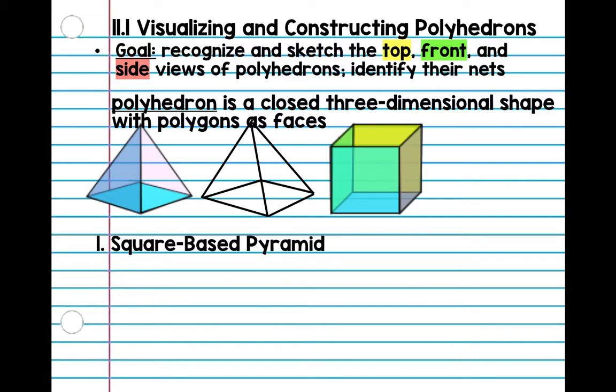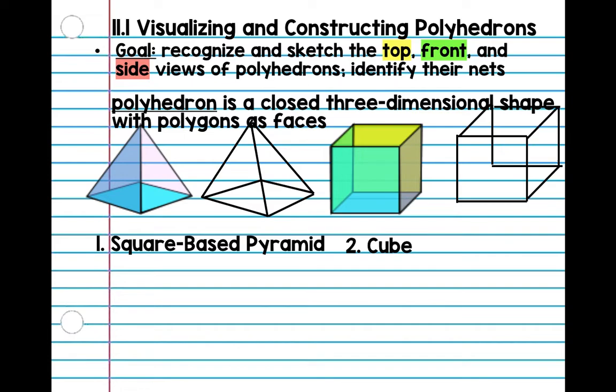Number two — you guys know what this one is — this is a cube. So this way that we're drawing is going to help you for all your prisms. Draw a square, draw a square going a little higher in the corner, then connect the lines.